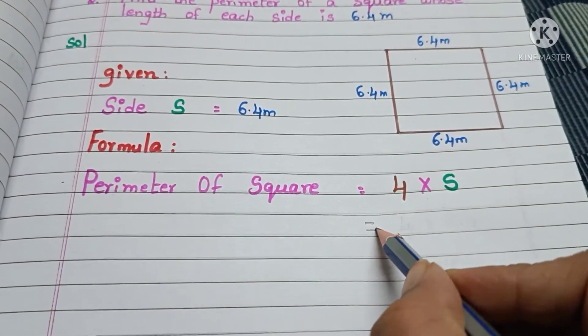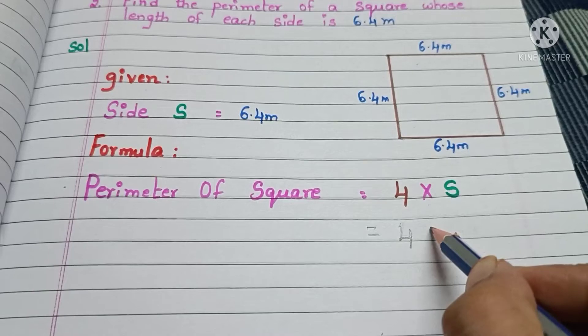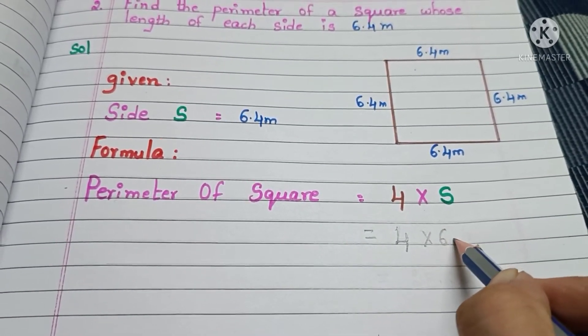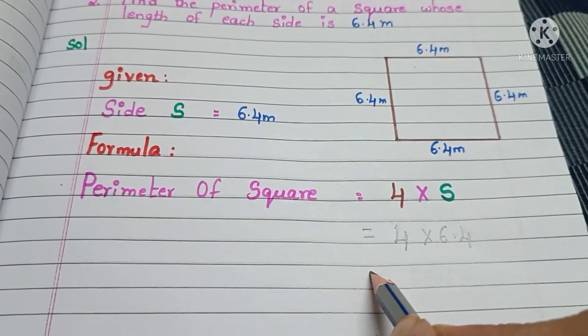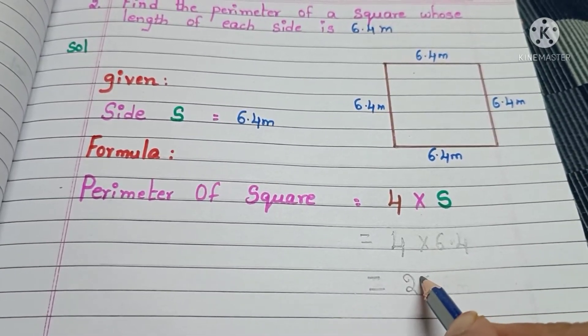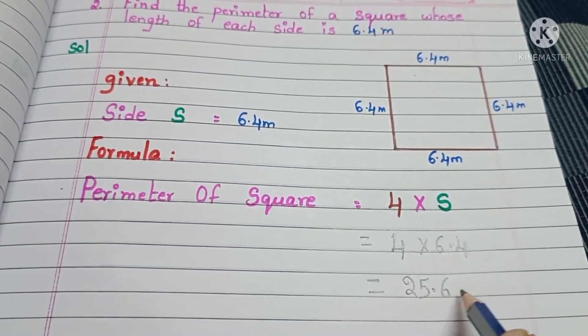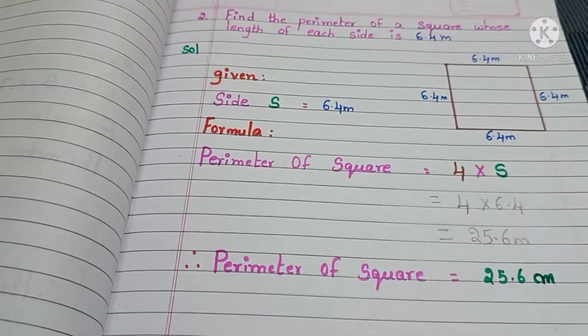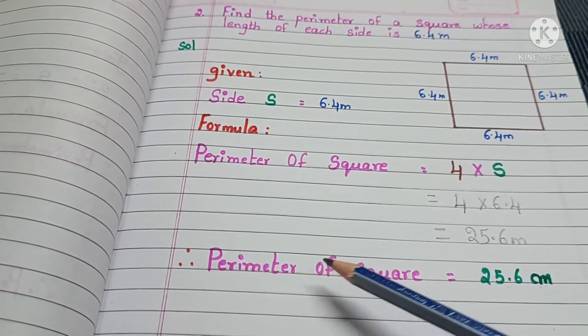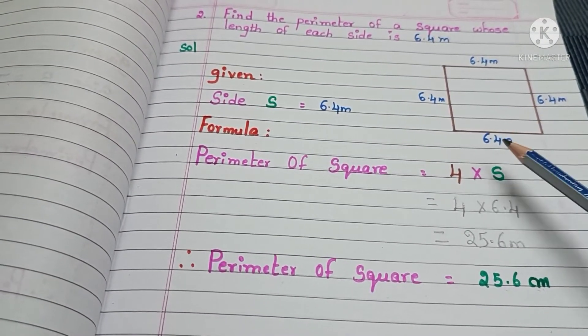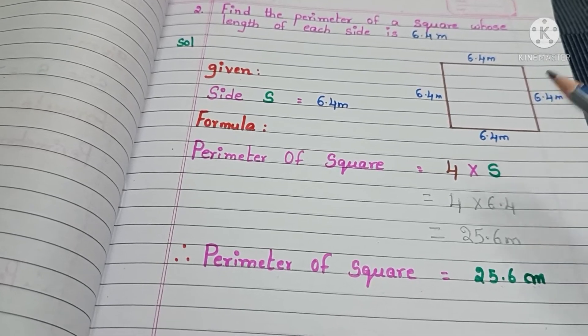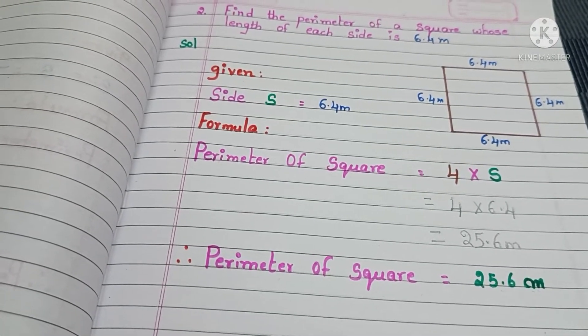That is equal to, copy down 4 times 6.4. 4 times 6.4 is 25.6 meters. Therefore, perimeter of a square whose length 6.4 meters is 25.6 meters.